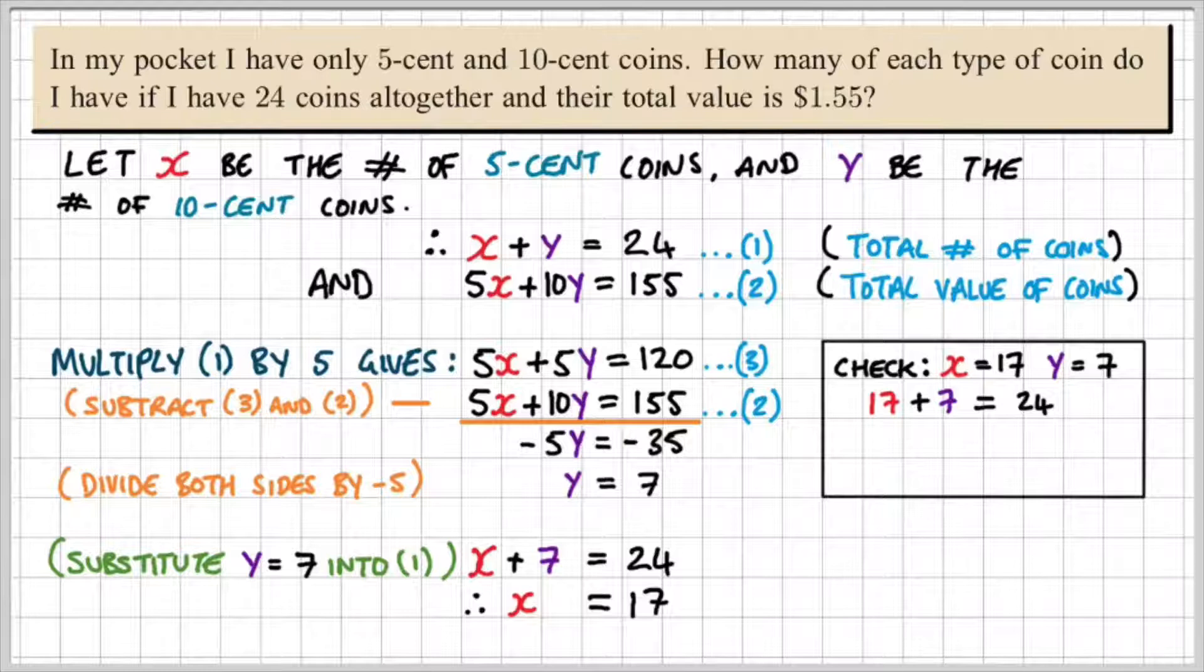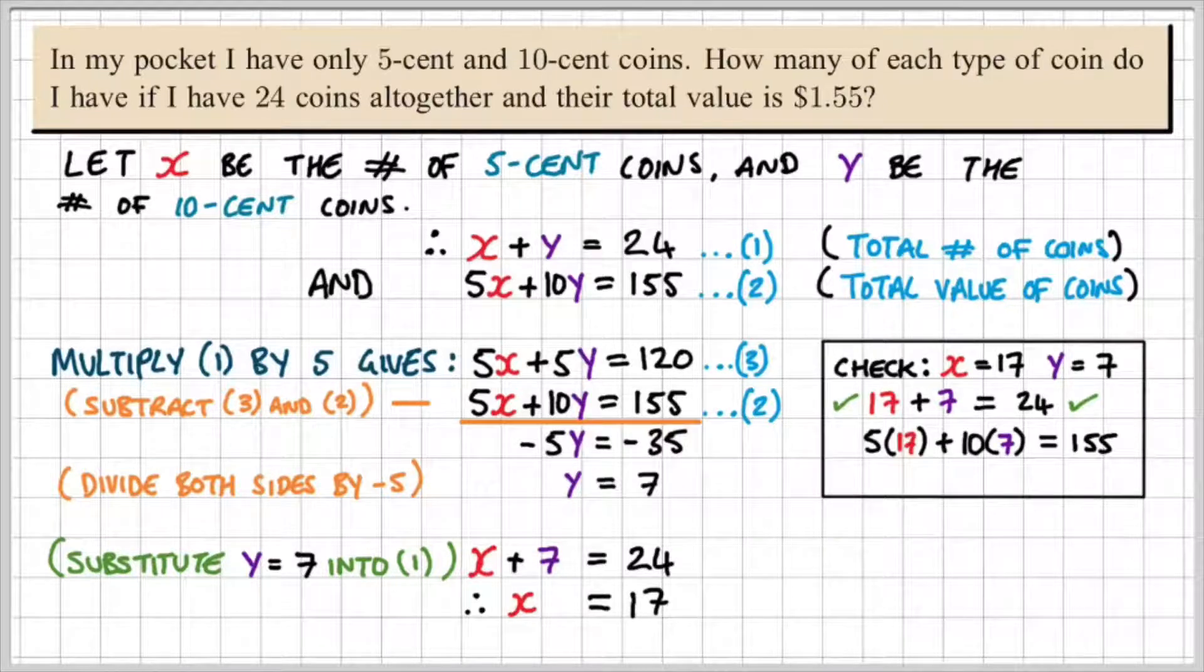Since 17 plus 7 is equal to 24, I know that both sides are balanced. Now if I substitute the values into equation 2, I get 5 times 17 plus 10 times 7 is equal to 155.